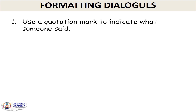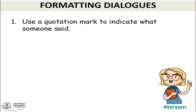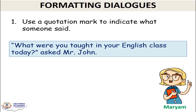Now let's see some rules we must obey while writing dialogues. First, you use a quotation mark to indicate what someone said. Marian is reporting the dialogue. She starts with an opening quotation mark: 'What were you taught in your English class today?' with a question mark before the closing quotation mark, then continues with 'asked Mr. John.' The words spoken by Mr. John are in the quotation mark, written word for word — don't add anything of your own.